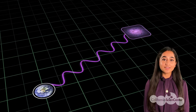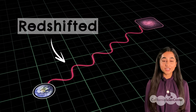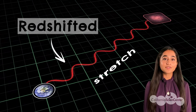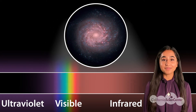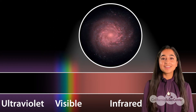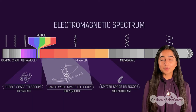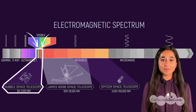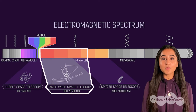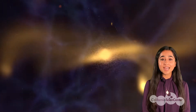The light traveling from the first stars and galaxies becomes red shifted, meaning that the light waves are stretched and move into the red part of the light spectrum. To detect this faint light, we need an infrared telescope. While Hubble observes light primarily in the visible part of the spectrum with some near infrared capability, Webb will observe light in the infrared. It is a time machine.